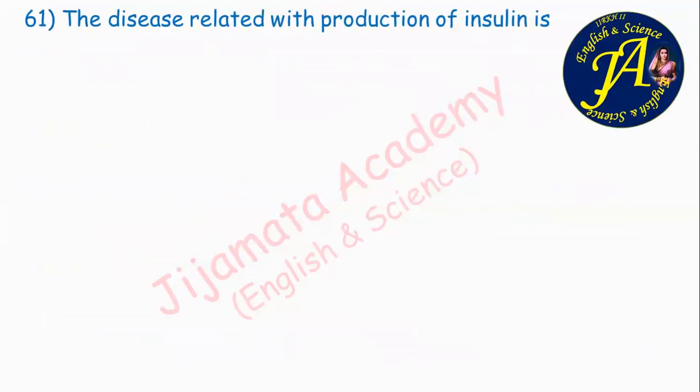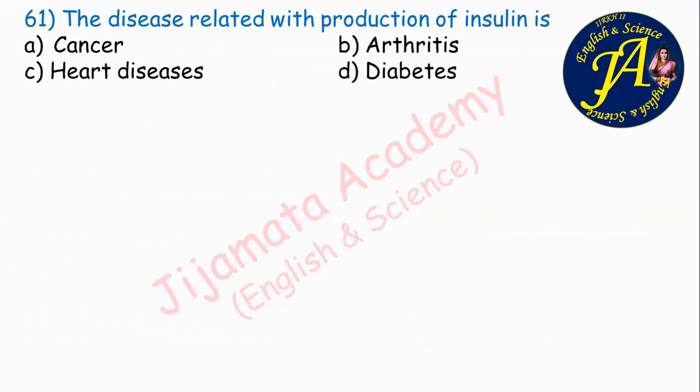The disease related with production of insulin is dash. Options are cancer, arthritis, heart diseases, diabetes. Correct answer is option D: diabetes is related with the production of insulin.